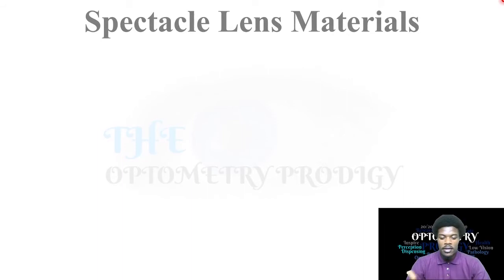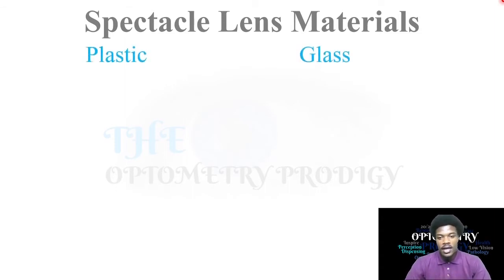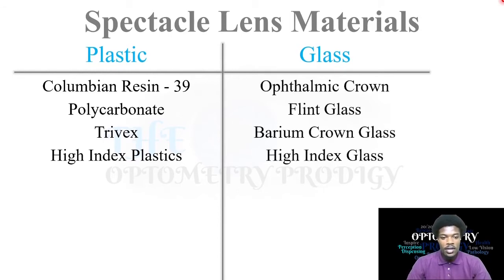Now let's look at spectacle lens materials. Key things to remember: if the Abbe value of a material is low, the chromatic aberration is higher; if the Abbe value is high, the chromatic aberration is lower. The refractive index is also important. Under plastics we'll cover CR39, polycarbonate, Trivex, and high index plastics. For glass we'll look at ophthalmic crown, flint glass, barium crown glass, and high index glass.